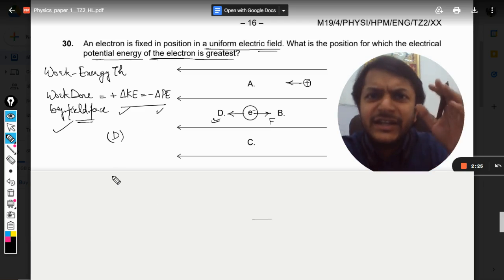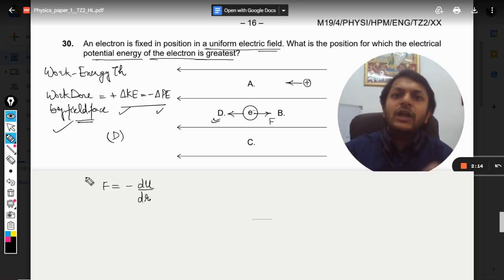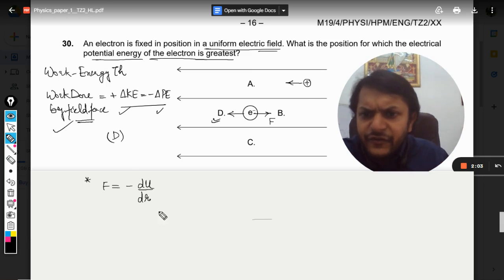Now the another explanation, which is basically derived from this only, but in electrostatic chapter we have studied this: F is equal to minus dU by dr. This is the formula of force that is used in conservative fields. This is used for conservative field forces. F equals minus dU by dr.